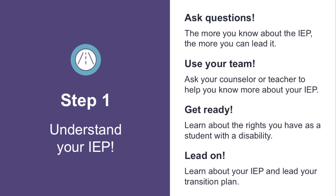Step 1: Understand your IEP. Ask questions — the more you know about the IEP, the more you can lead it. Use your team; ask your counselor or teacher to help you know more about your IEP. Get ready: learn about the rights you have as a student with a disability. Lead on: learn about your IEP and lead your transition plan.